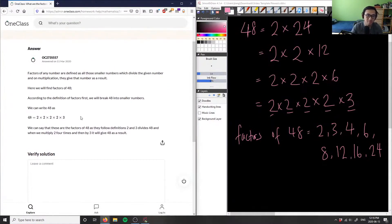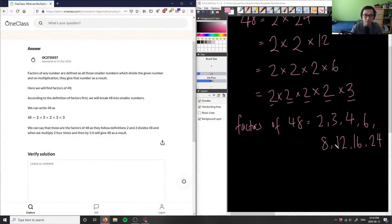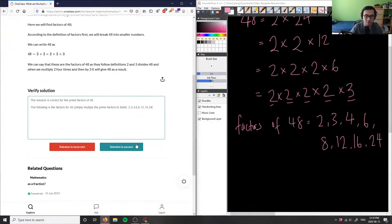So this here is the correct solution. Again, they gave us the prime factorizations, but they actually didn't give us the specific factors here, because they did ask us what the factors of 48 are. These are the prime factors, but they're not specifically the factors here. So the solution is correct for the prime factors. And I can say the following is the factors for 48. Simply multiply the prime factors to itself. So I can say it's 2, 3, 4, 6, 8, 12, 16, and 24. These are all the factors. So this solution here is correct.